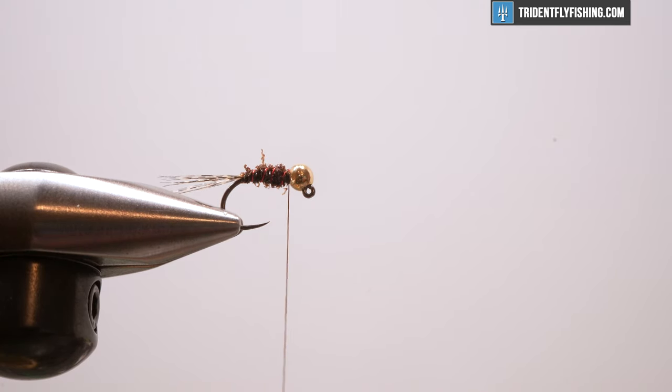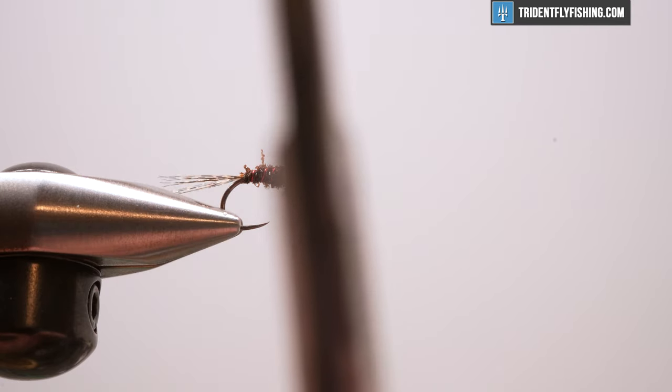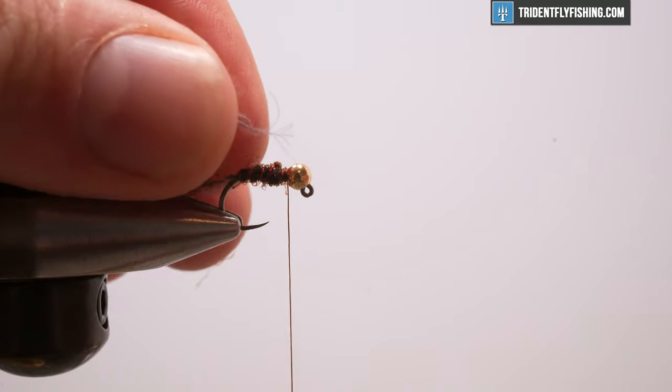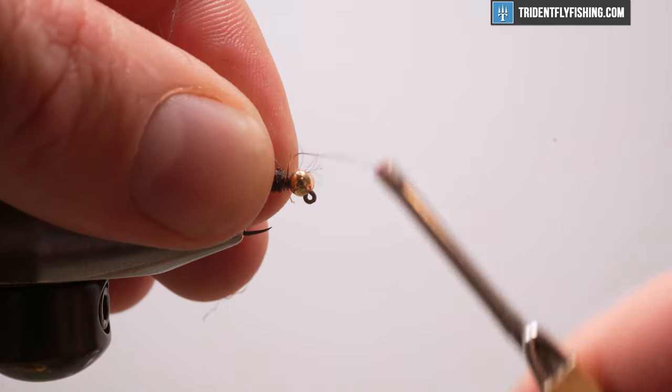The next material we're going to tie in, and you can tie in a couple different colors here. Slate dun, natural dun. CDC comes in a bunch of different colors. I like this slate color. I think it looks good. It's a good contrast with this brown ice dub. And the easiest way for me to tie this in is to take a whole feather and wrap it just like a traditional collar on a wet fly.